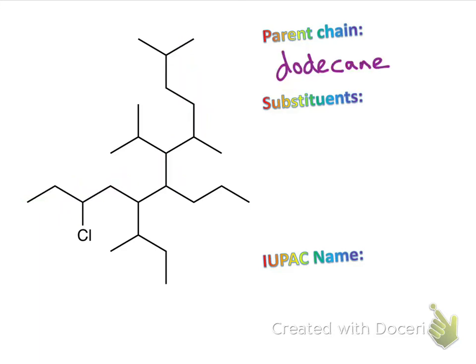Up next, we're going to number. There are two possible ways we could number this — we could start up here going 1, 2, 3, 4, and so on, or we could start numbering from the other end. Which one is right? Remember, we want to encounter substituents as soon as possible. If we do it the top way, we encounter our substituent at position 2. Starting from the bottom left, we encounter it at position 3. The lower number wins, so position 2 is correct.